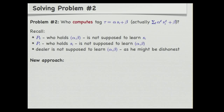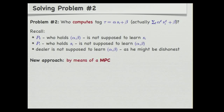Let's look again at what problem we want to solve. We have player P_I holding some private data — his share — and player P_K holding some private data — his key. We want player P_I to learn the authentication tag as a function of this private data, but nothing beyond that, and any other player should learn nothing at all. This is nothing else than a multiparty computation problem. So in principle we could solve this just by doing a multiparty computation.